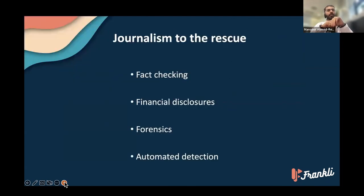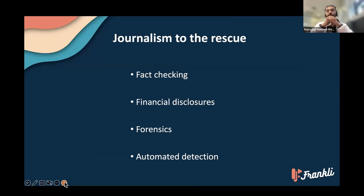I would argue that most of the credit for saving us from that avalanche of disinformation goes to journalists. Because journalists perform some very important functions: fact checking, financial disclosures to see if there are conflicts of interest, forensic analysis when a whistleblower submits documents, and increasingly automated detection tools to see if a piece of media is being reused from an older story.